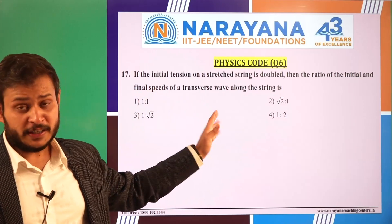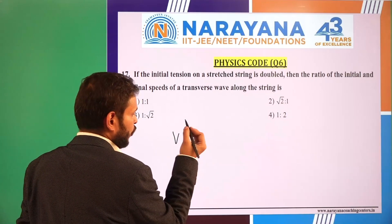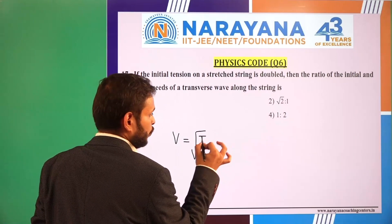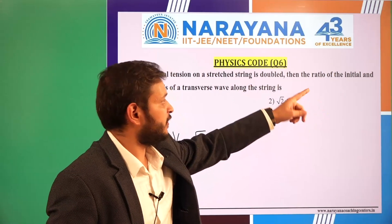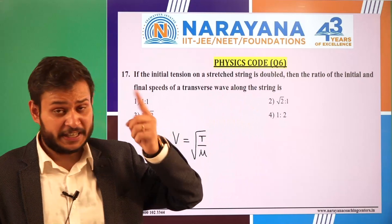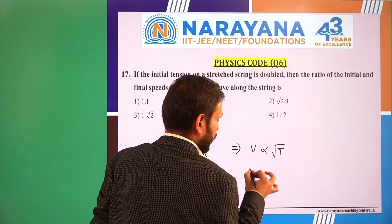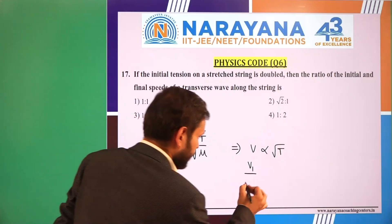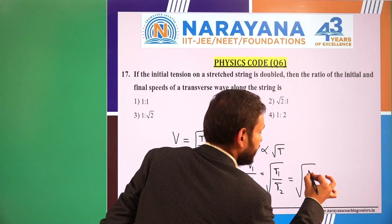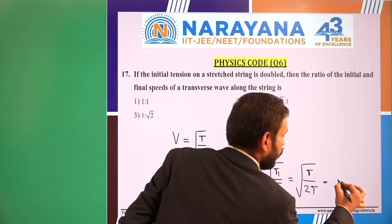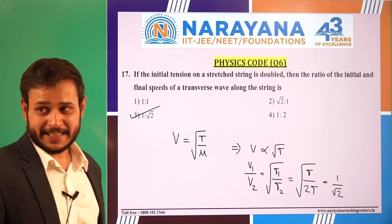Question 17 is from waves — specifically the speed of a wave in a string. The formula is v = √(T/μ). If the initial tension is doubled, we need the ratio of initial to final speed. Since μ is the same for the same wire, v ∝ √T, so V₁/V₂ = √(T₁/T₂) = √(T/2T) = 1/√2. The ratio is 1:√2, which is option 3.